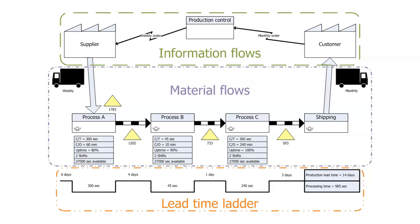On the bottom is what we call the lead time ladder. It tracks the time we actually spend processing these materials and how much time is spent waiting or in queue. What we want to do is minimize the waiting in the queue, because those are non-value-added activities, and focus on the value-added stuff — the actual processing time.